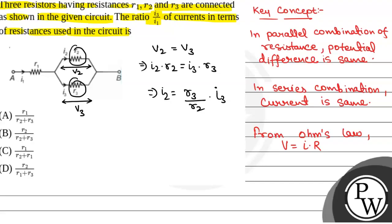Now we will see that here I1 current is coming and I2 and I3 current is going. So net incoming current will be equal to net outgoing current that is I1 will be equal to I2 plus I3 or we will have I1 that will be equal to R3 by R2 into I3.